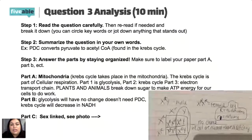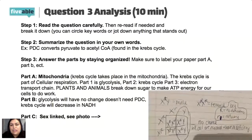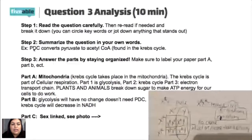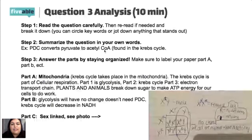The pyruvate dehydrogenase complex, known as PDC, catalyzes the conversion of pyruvate to acetyl-CoA, a substrate for the Krebs cycle (citric acid cycle). The rate of pyruvate conversion is greatly reduced in individuals with PDC deficiency, a rare disorder. In my own words: PDC converts pyruvate to acetyl-CoA, which is found in the Krebs cycle. This kind of question is like asking about a disorder that doesn't allow conversion of pyruvate to acetyl-CoA.